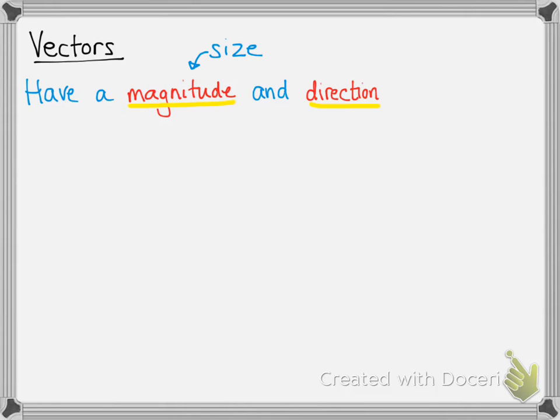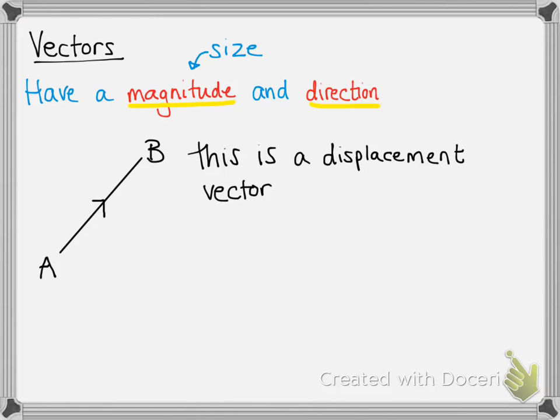The magnitude is just another way of saying its size. Here we have this vector AB. This is a displacement vector, and what that means is it represents a movement from A to B. This is different to a position vector, which we'll come to later.